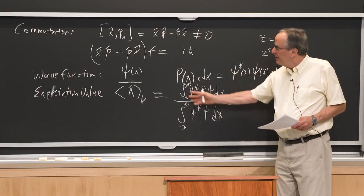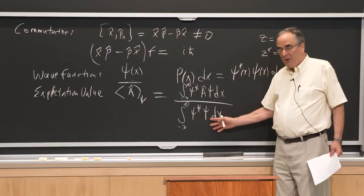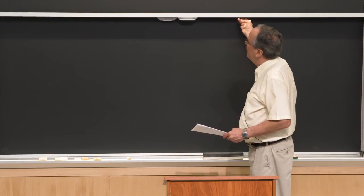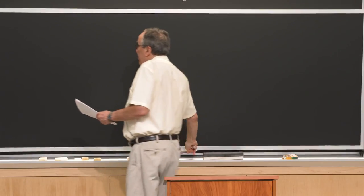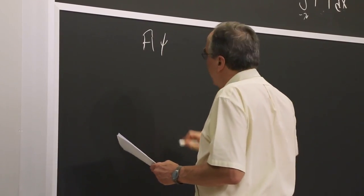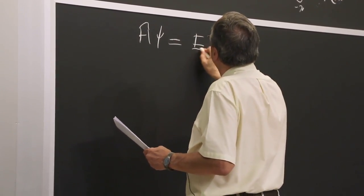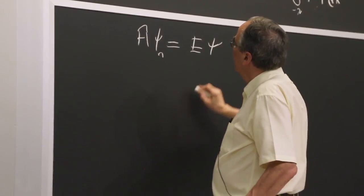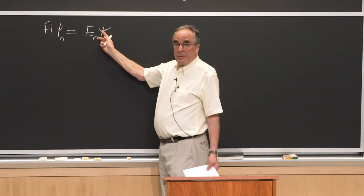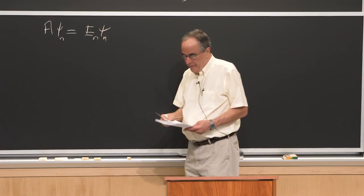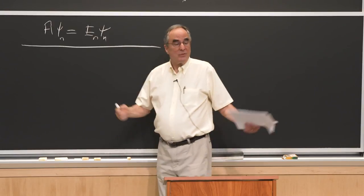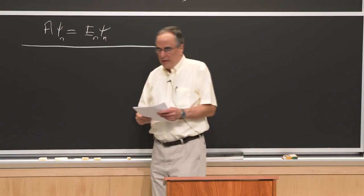The Schrödinger equation is the Hamiltonian operating on the wave function giving an energy times that function — an eigenvalue equation. We have H-hat·psi_n = E_n·psi_n. Now we're ready to start playing games with this strange new world, beginning with the free particle.